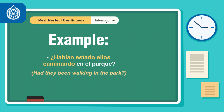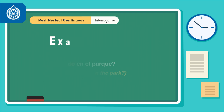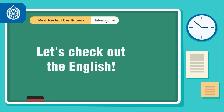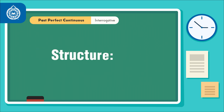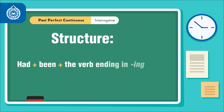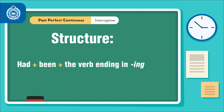Okay, now that you have seen how to form the past perfect continuous in Spanish, let's check out the English. The structure is as follows: the word 'had', depending on the subject, plus 'been' — the past participle form of 'to be' — plus the verb ending in -ing.